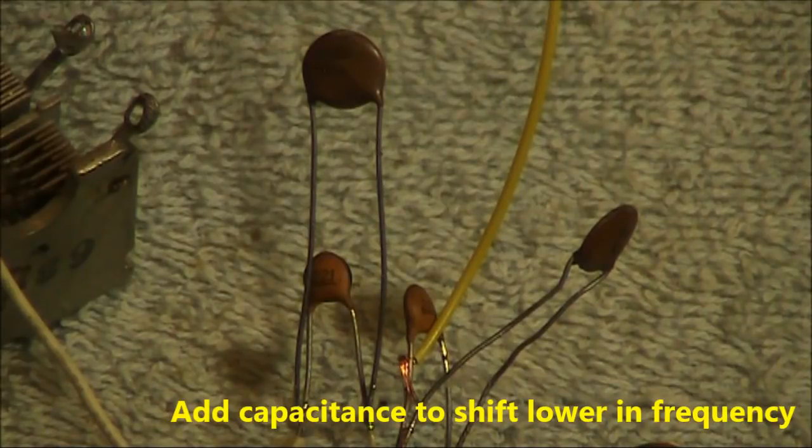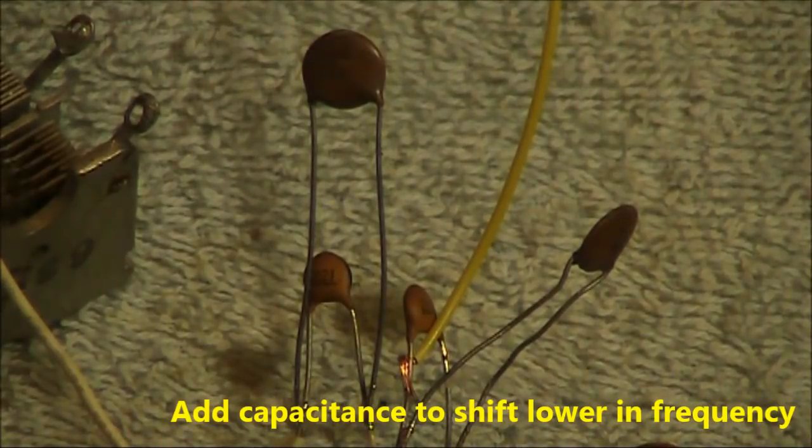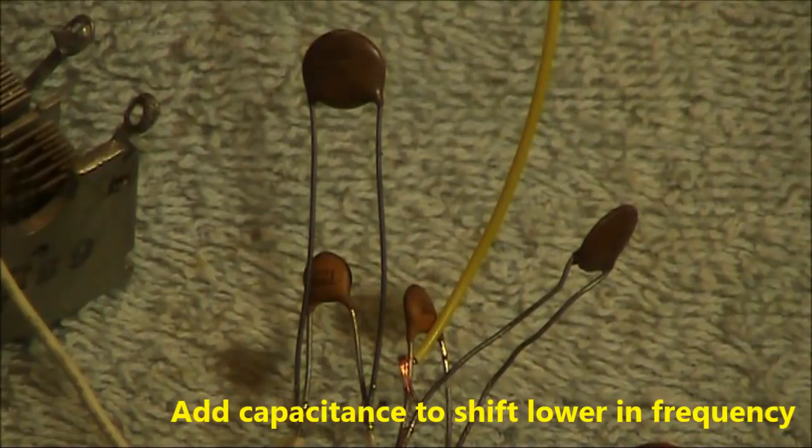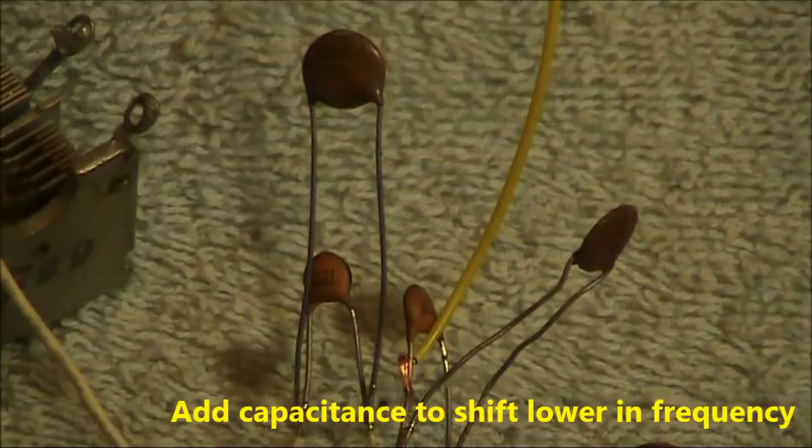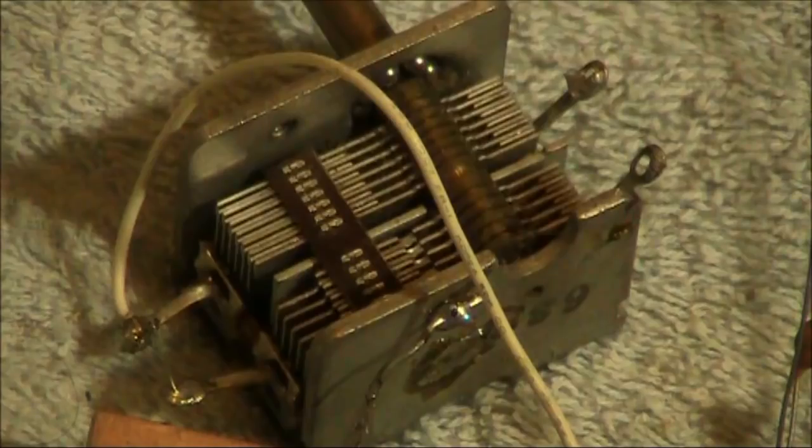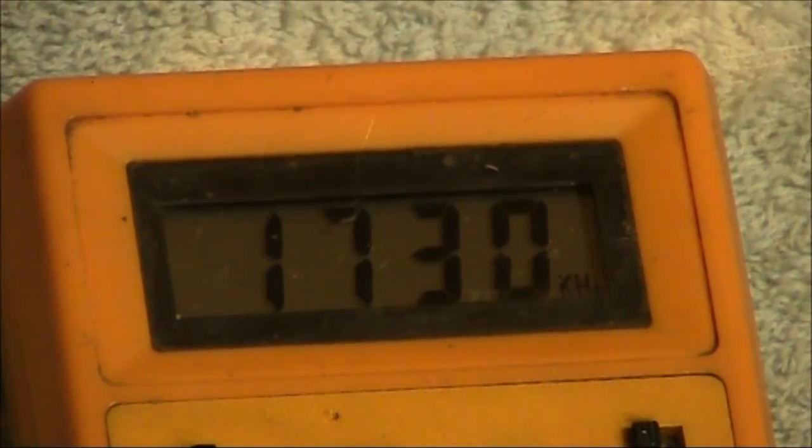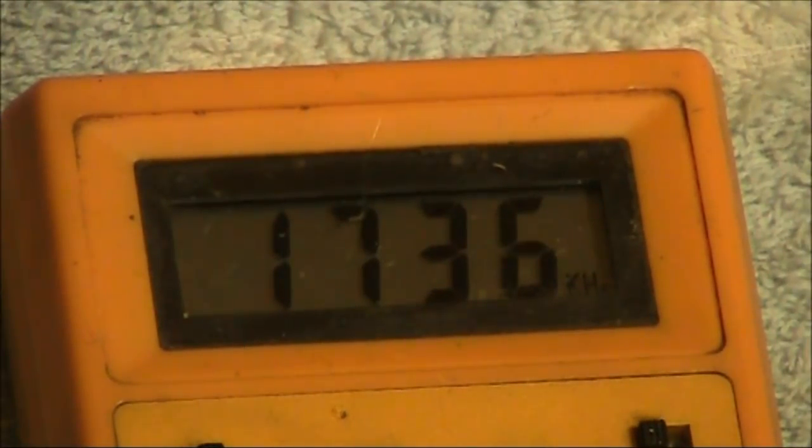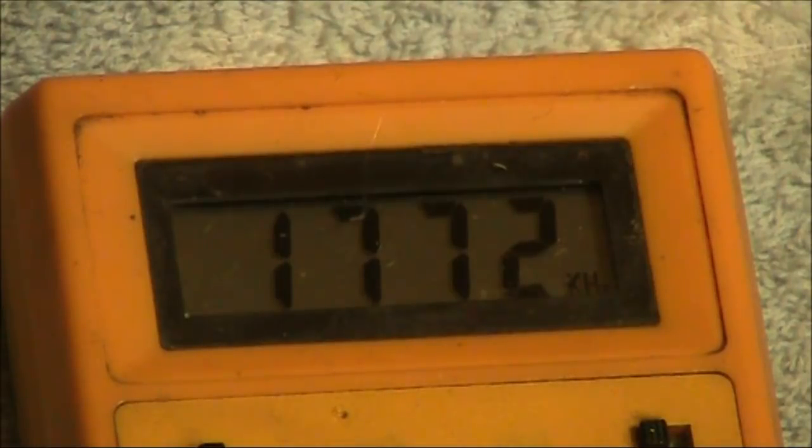Can you get any lower in frequency? The answer is you can. Here, I've brought some 1nF capacitors in parallel with both of the 220pF capacitors. That is, between base and emitter, and emitter and ground. With the variable capacitor fully meshed, I'm getting 1730 kHz. Reducing the capacitance on the variable capacitor, it goes up to a maximum of 1772 kHz.